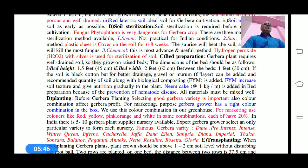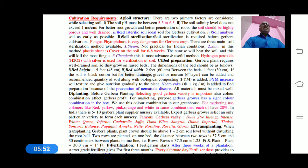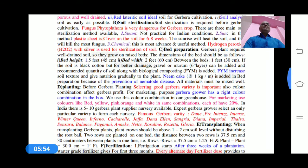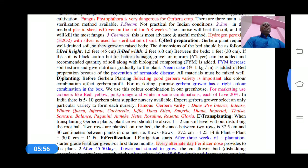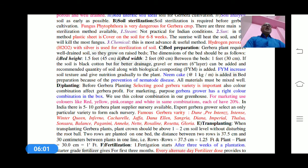In chemical methods, hydrogen peroxide with silver is used for soil sterilization. Several chemicals are important for sterilization and soil preparation.